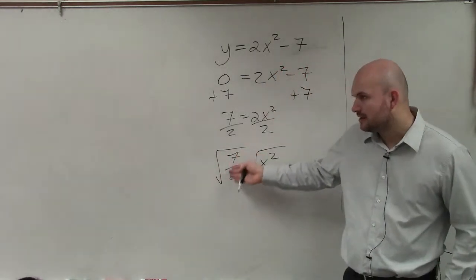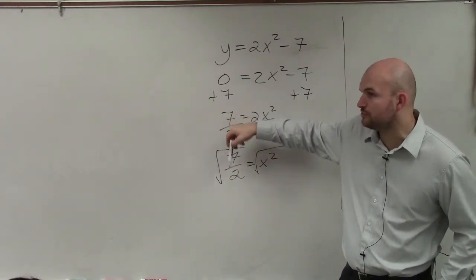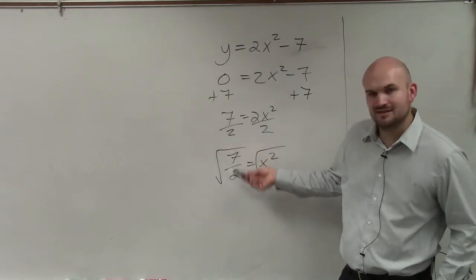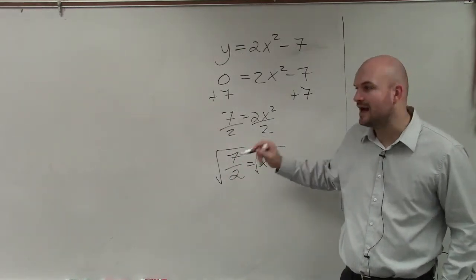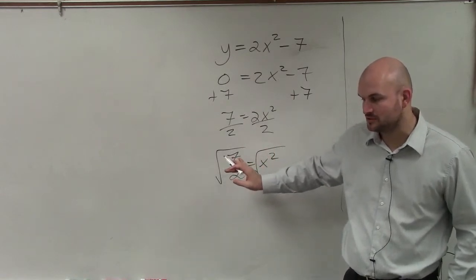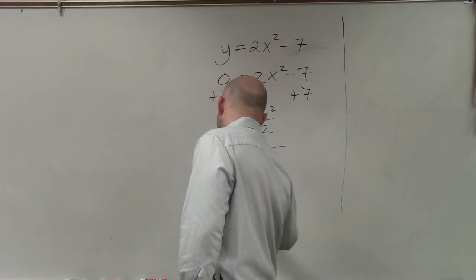But here, when you're taking the square root of a fraction, you take the square root of your numerator and denominator, and these are both going to leave us with decimals. So rather than providing a decimal, which would be an approximation in this case, I would like you to just leave it as the fraction.